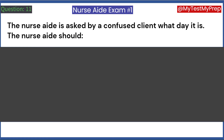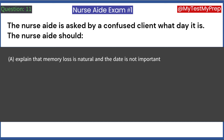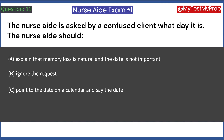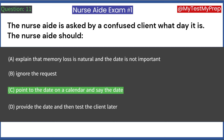The nurse aide is asked by a confused client what day it is. The nurse aide should: A. Explain that memory loss is natural and the date is not important. B. Ignore the request. C. Point to the date on a calendar and say the date. D. Provide the date and then test the client later. Answer: C. Point to the date on a calendar and say the date.